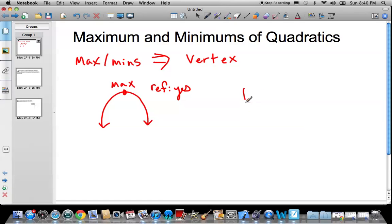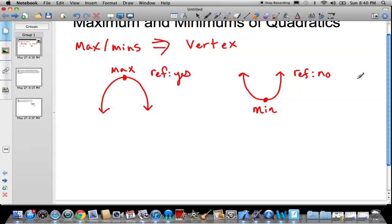If you have your standard position and your REF is null, then you have a minimum. And here again, that's your vertex. So the key is when you're doing these problems, it's to find your vertex. And how do you do that? Well, there's two ways.